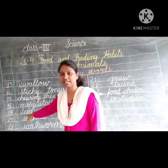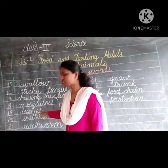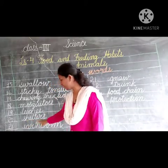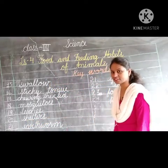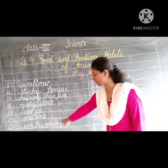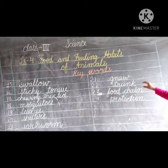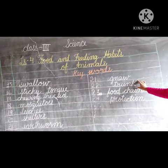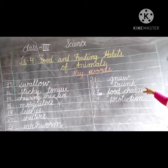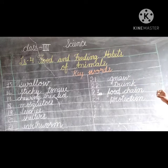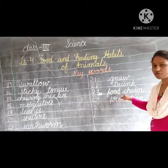Next, 'leeches' - L-E-E-C-H-E-S. Next, 'shelters' - S-H-E-L-T-E-R-S. Next, 'earthworm' - E-A-R-T-H-W-O-R-M. Next, 'gnaw' - G-N-A-W. Gnaw means repeatedly biting food; it is what rodents do. Next, 'trunk' - T-R-U-N-K, because the elephant has a trunk. Next, 'food chain'.